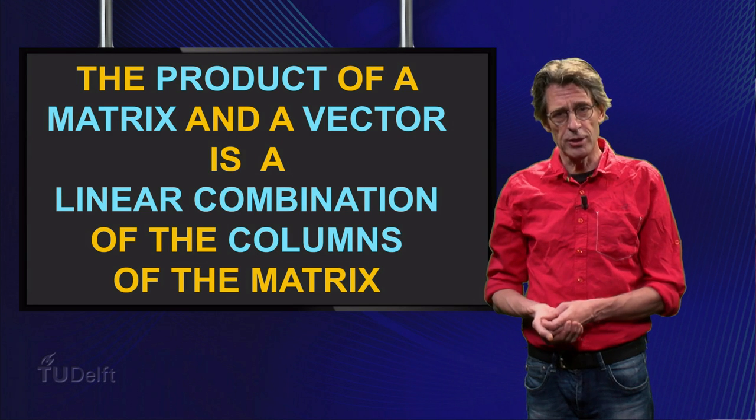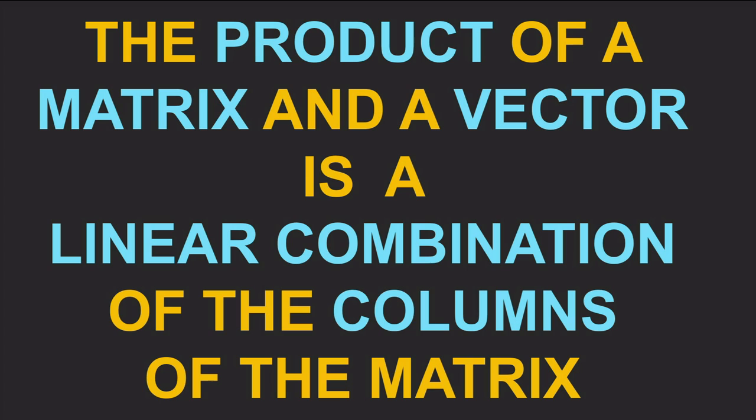Have another look at the definition. The product of a matrix and a vector is a linear combination of the columns of the matrix with the elements of the vector as coefficients.